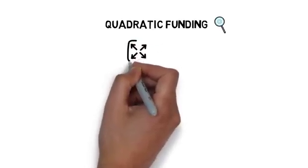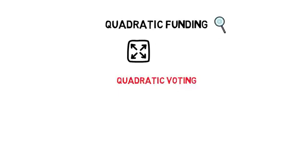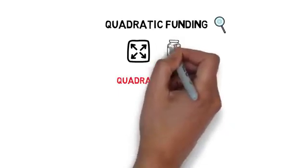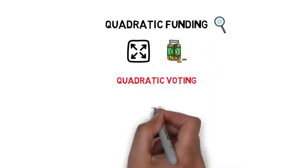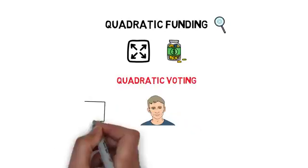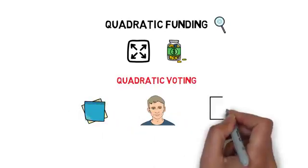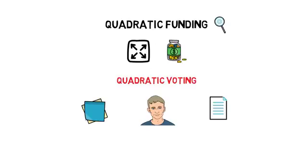Quadratic funding is a concept that extends ideas from quadratic voting to a funding mechanism. Both concepts were widely discussed by Vitalik Buterin in his blog posts and a paper that he co-authored together with Zoe Hitzig and Glenn Weyl.